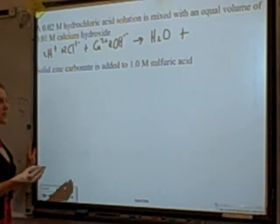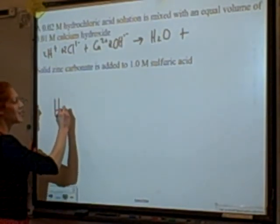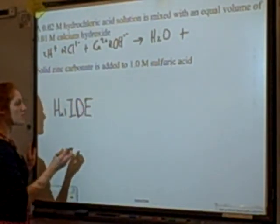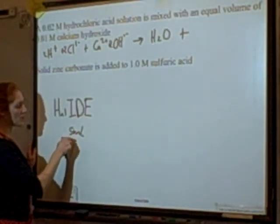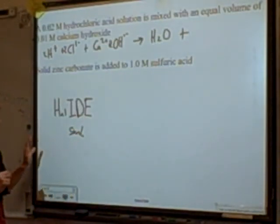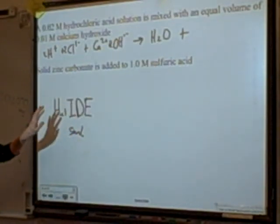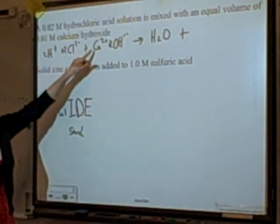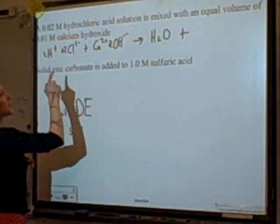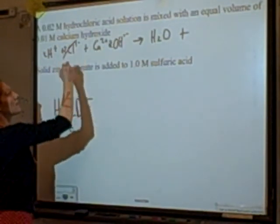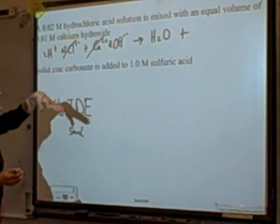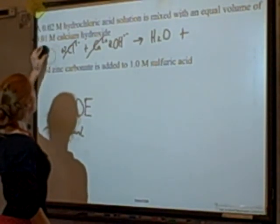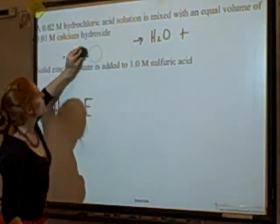Chloride is a halide — halides are generally soluble but insoluble with silver, mercury, and lead(II). Here the halide is not with any of those, so calcium chloride is soluble. That means chloride and calcium are spectator ions. The net ionic equation is simply H+ + OH- → H2O.